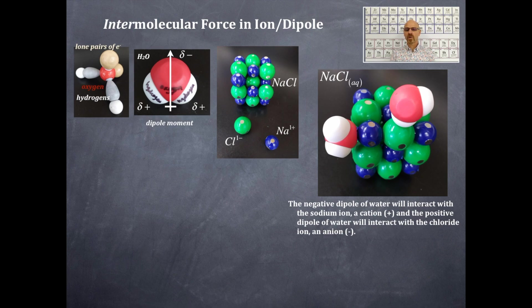So the negative dipole of water will interact with the sodium ion, that is a cation of a positive charge. And the positive dipole of water will interact with the chloride ion, and that is the anion. So I want you to notice that right there, that the chloride is in the green, and it's negatively charged, and that's why the positive end of the water molecule, i.e. the white hydrogen, is attached to the chloride.